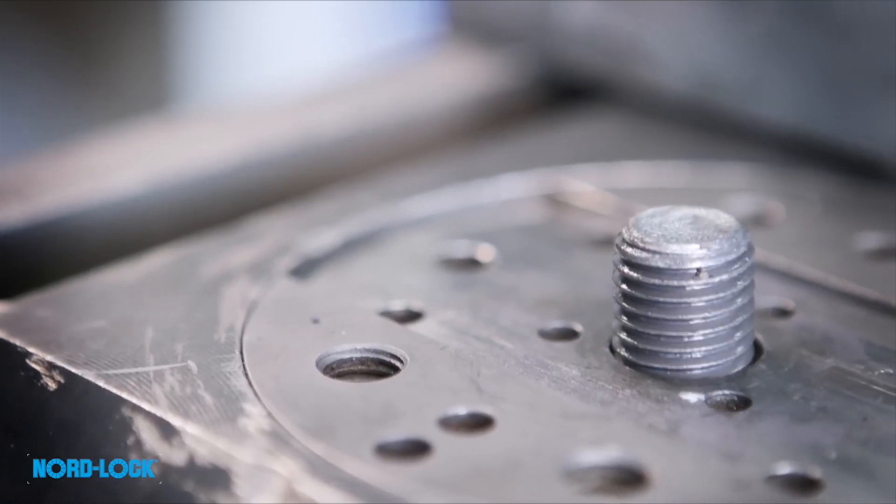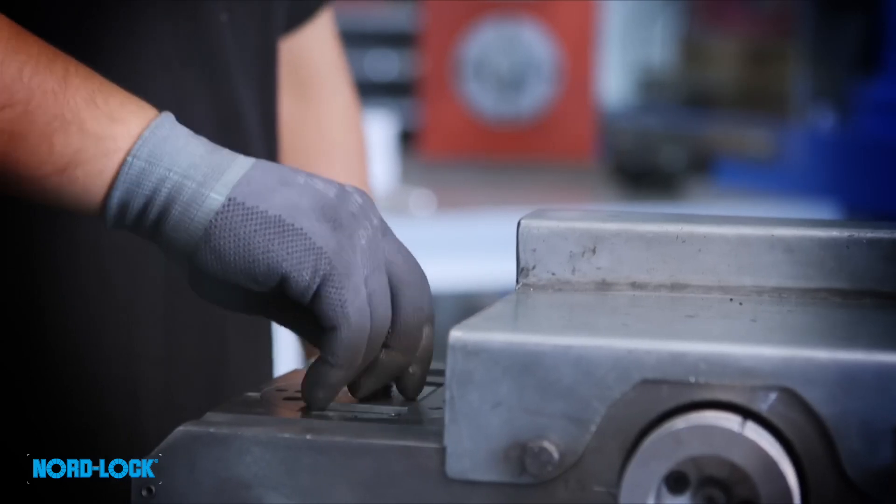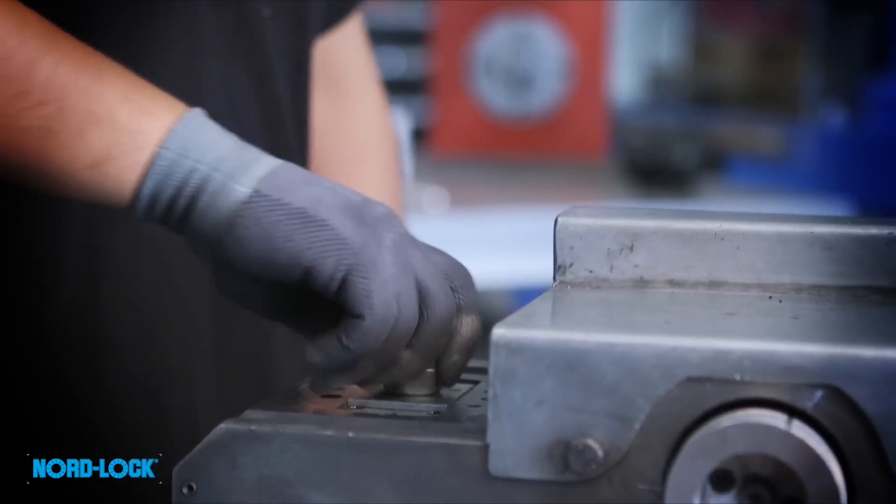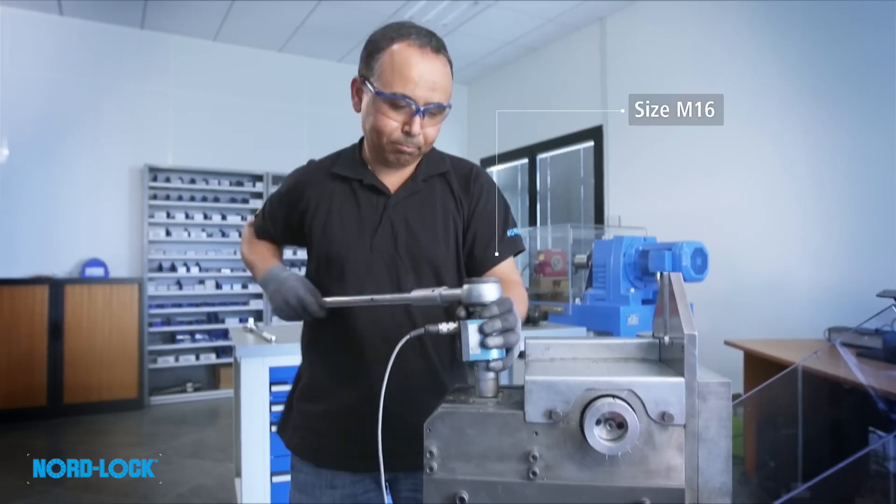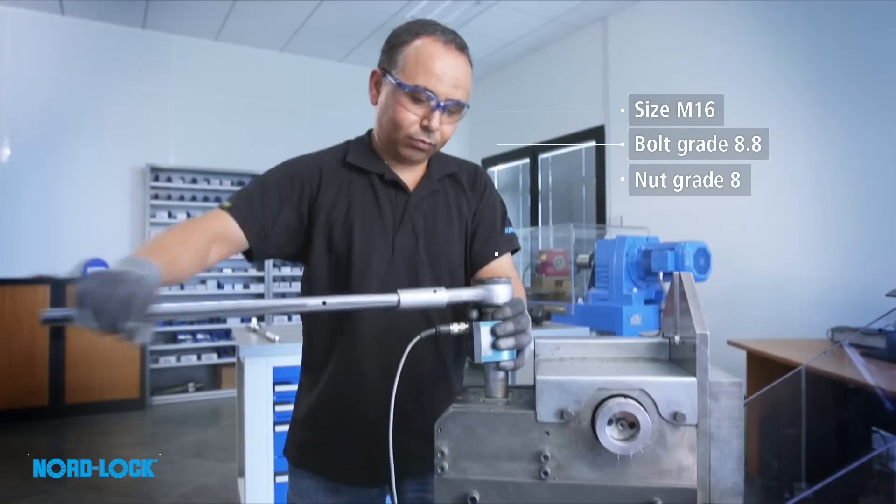Clamp load is vital, because when lost, the bolt is unable to withstand the working load. We lubricate and assemble an unsecured bolt of size M16.